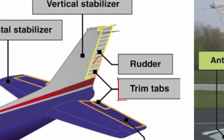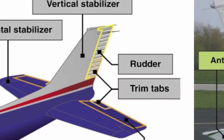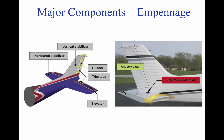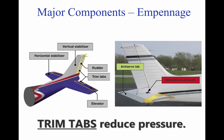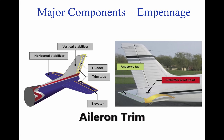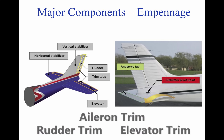Trim tabs are small, movable portions of the trailing edge of the control surface. These movable trim tabs, which are controlled from the flight deck, reduce control pressures. Trim tabs may be installed on the ailerons, the rudder, and/or the elevator.